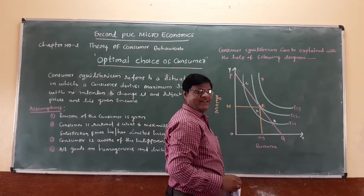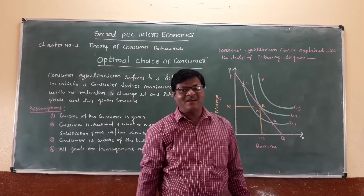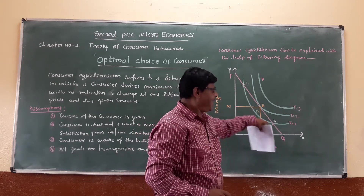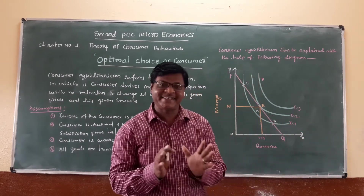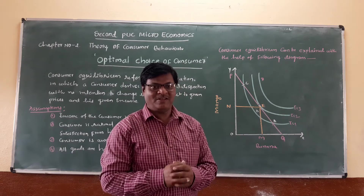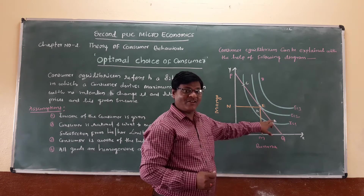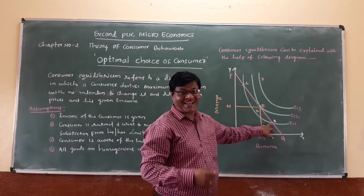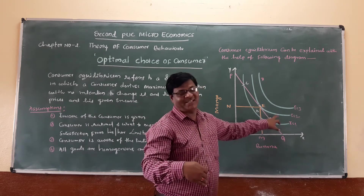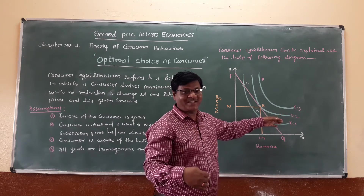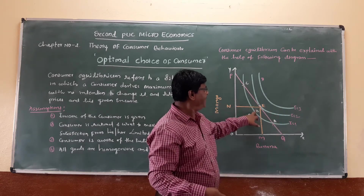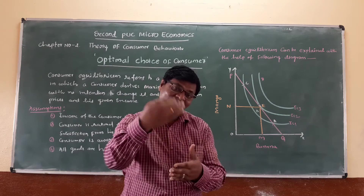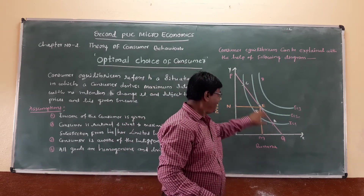Points A, B, and C are not considered the optimal choice of consumers because they lie below the IC2 curve — they are on IC1, which is smaller than IC2. Since IC2 is higher than IC1, points A, B, and C do not represent the optimal choice. They are all below the IC2 curve.